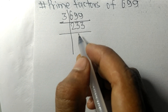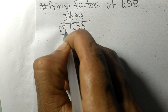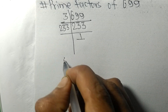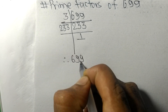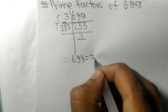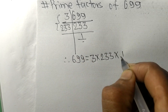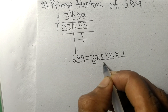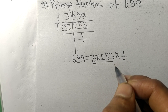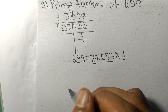We get 233, which is a prime number, so it is divisible by 233 only, and on dividing we get 1. Therefore, 699 = 3 × 233. So 3, 233, and 1 are the prime factors of 699. That's all for today — thanks for watching.